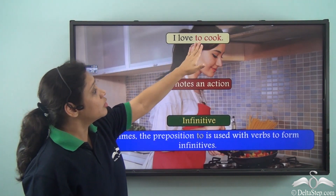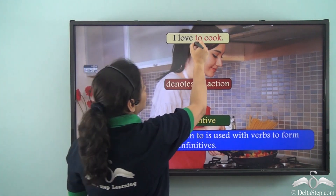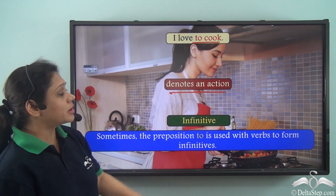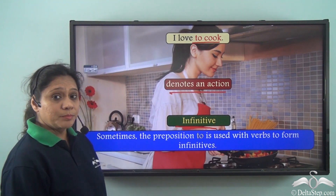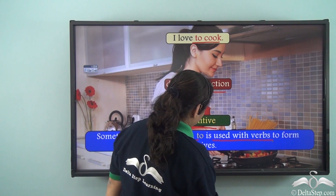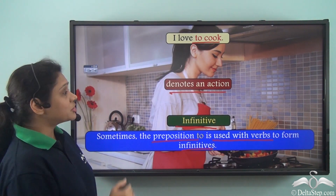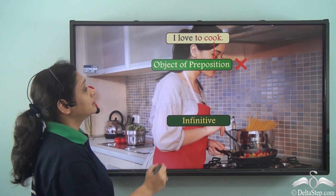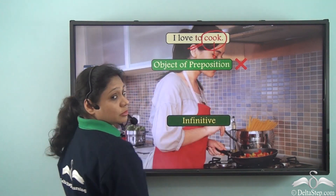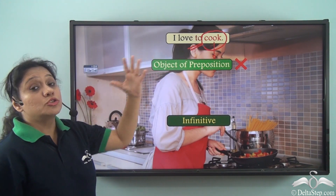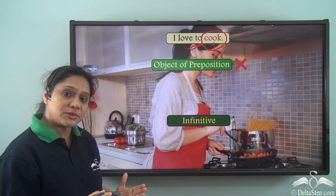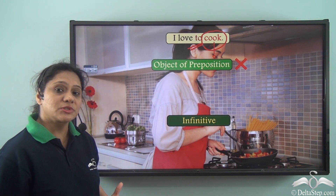Consider: 'I love to cook.' In this sentence, 'to cook' denotes an action and is an infinitive verb. Sometimes the preposition 'to' is used with verbs to form infinitives. In such cases, remember that 'cook' is not the object of the preposition 'to.' To cook, to walk — these are infinitives, and the verb following 'to' is not the object of the preposition 'to.'